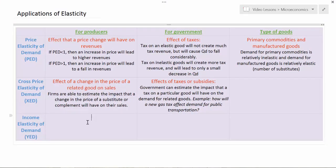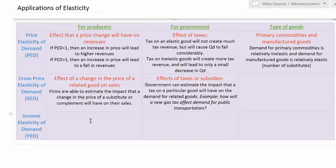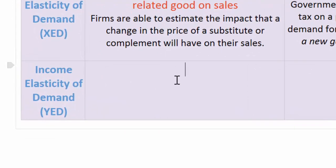A knowledge of XED can help government make informed decisions about the impacts of its taxes and subsidies on particular goods on related goods. XED does not really have many applications when it comes to primary commodities versus manufactured goods, so we're going to move on to income elasticity of demand. YED refers to how consumers' demand for a particular good will change when their incomes change.